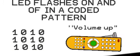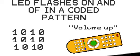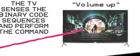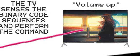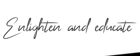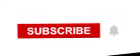The TV senses the binary code sequence and performs the corresponding command. Remotes also send an ID code to the device so the signal will not interfere with other devices.